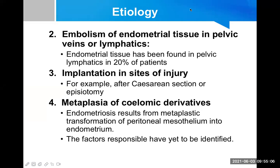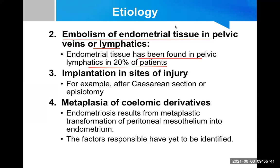The second hypothesis is embolization of endometrial tissue via pelvic veins or lymphatics. Endometrial tissue has been found in pelvic lymphatics in 20% of patients — this is evidence for this mechanism. Through lymphatics and blood vessels, some endometrial tissue has reached ectopic sites.